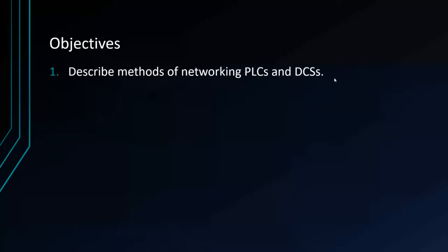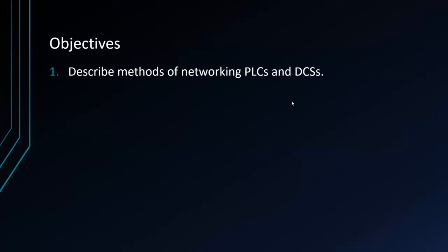Industrial Networks Part B is about delivery methods. We'll describe methods of networking PLCs and DCSs. As instrumentation technicians, we're mostly limited to the physical layer of the OSI model — installing connectors, cables, and things like that. Today we're looking at the application layer and transport layer, and how we squeeze information from those layers into a message so it can be sent from a transmitter to a controller, from a controller to a server, to an HMI, to a historian, and so on.